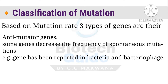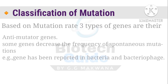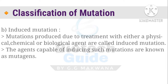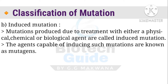In this video we will briefly discuss spontaneous mutation. The second type, induced mutation, is produced by physical, chemical, or biological agents called mutagens, and will be discussed in the next video.